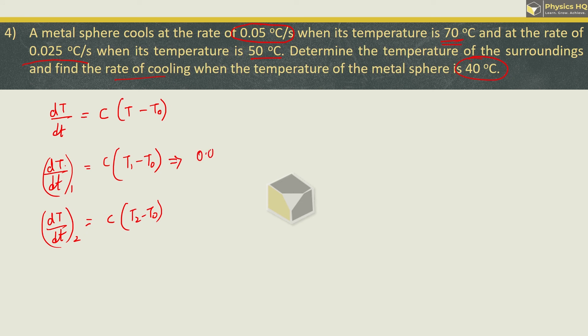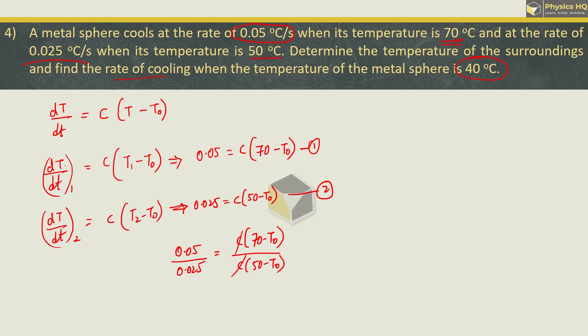Now, the rate of cooling is 0.05 equals C times 70 minus T0. In the second case, we got 0.025 equals C times 50 minus T0. Now take the two equations ratio, so we got 0.05 divided by 0.025 equals C into 70 minus T0 over C times 50 minus T0. C cancels, this is 2 equals 50. When we cross multiply, we get 100 minus 2 T0 equals 70 minus T0. Moving terms around, what we are left with is T0 equals 30 degree Celsius. This is the surrounding temperature.